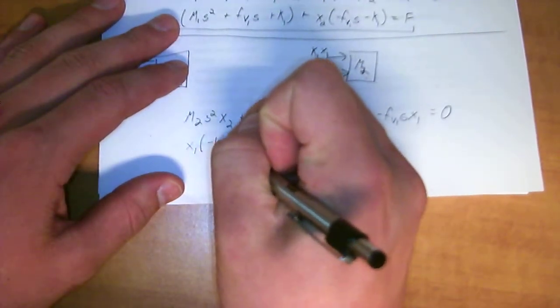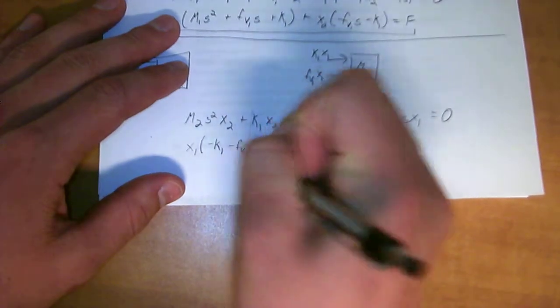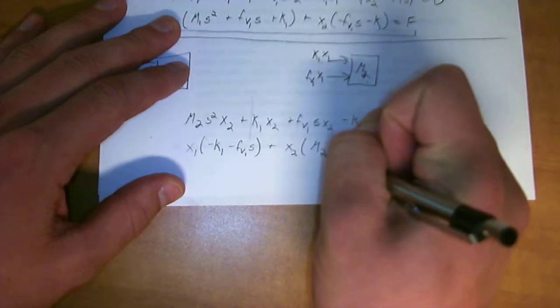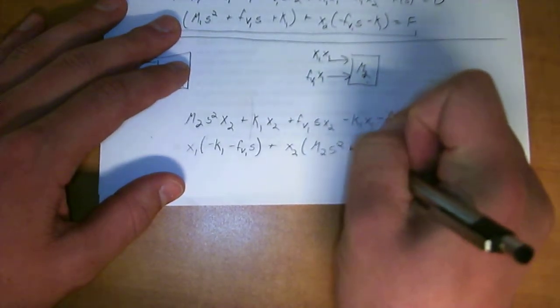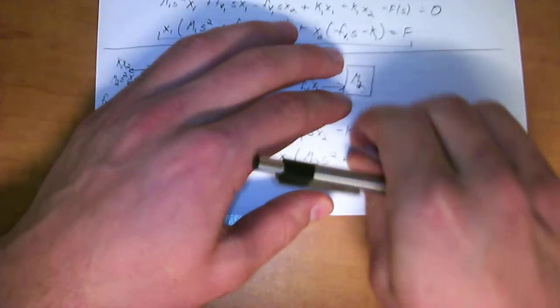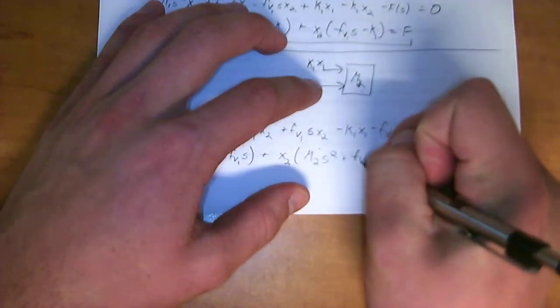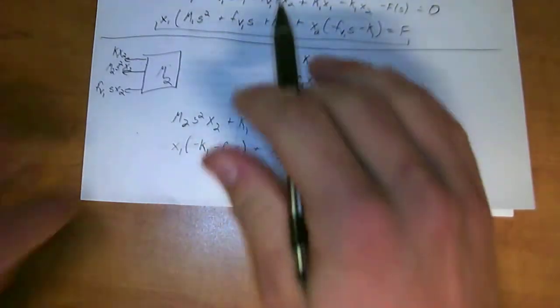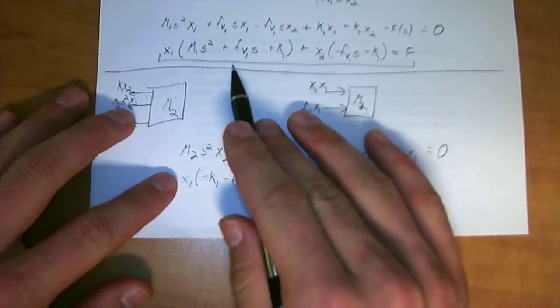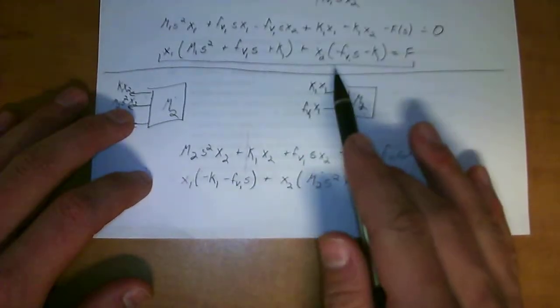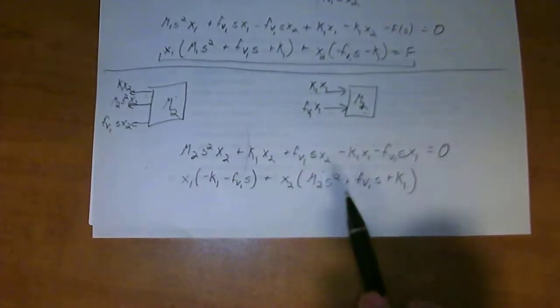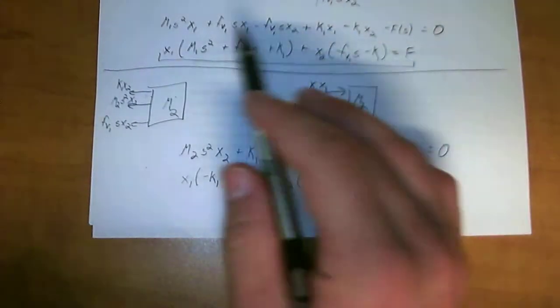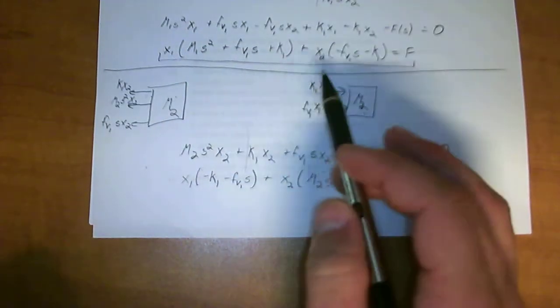So, I'm going ahead and grouping x1 and x2 again. I'm going to make that x1 of negative k1 minus fv1 s, plus x2 of m2 s squared, make sure it's in descending order too, plus fv1 s, plus k1. There we go. So, now we have these two equations. And you'll see I've got them ordered x1, x1, x2, x2.